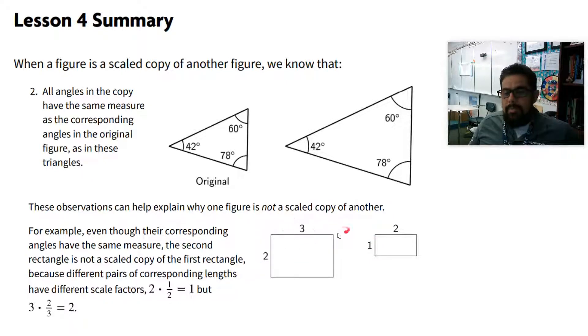So it's a scale factor of one half. But when you look at the top side, it is not a scale factor of one half. Three times one half is not two. So these are not scaled copies. The sides are scaled differently. Thank you, ladies and gentlemen.